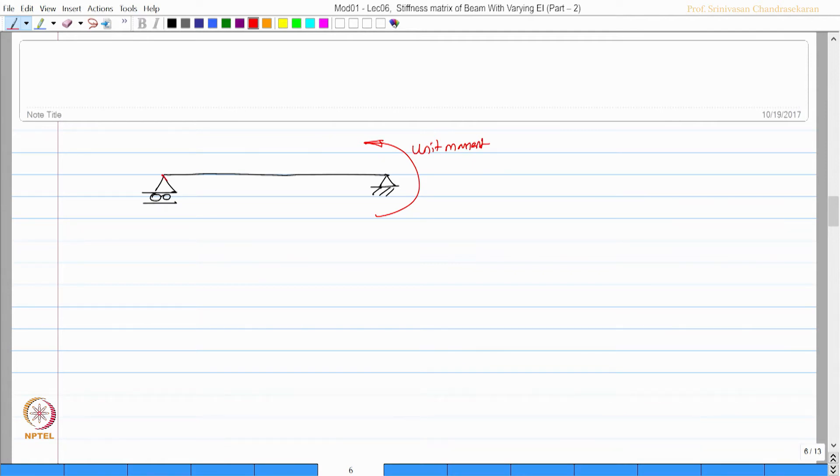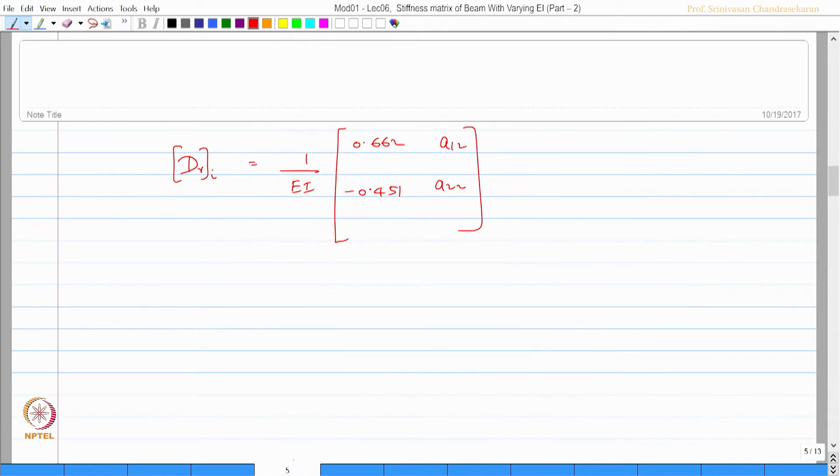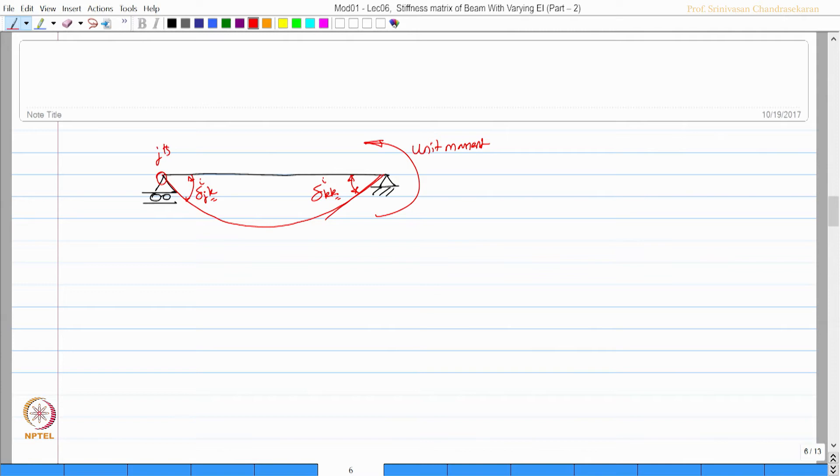So the beam will deflect like this. Say this is my value which I am going to get. This is going to be my delta_kk of the i-th beam. This is delta_jk of the i-th beam. If you look carefully, this was the second subscript j because the unit moment was given at the j-th end. With the same logic, the second subscript will be k because unit moment is given at the k-th end. So this is my j-th end, this is my k-th end, this is my i-th beam.